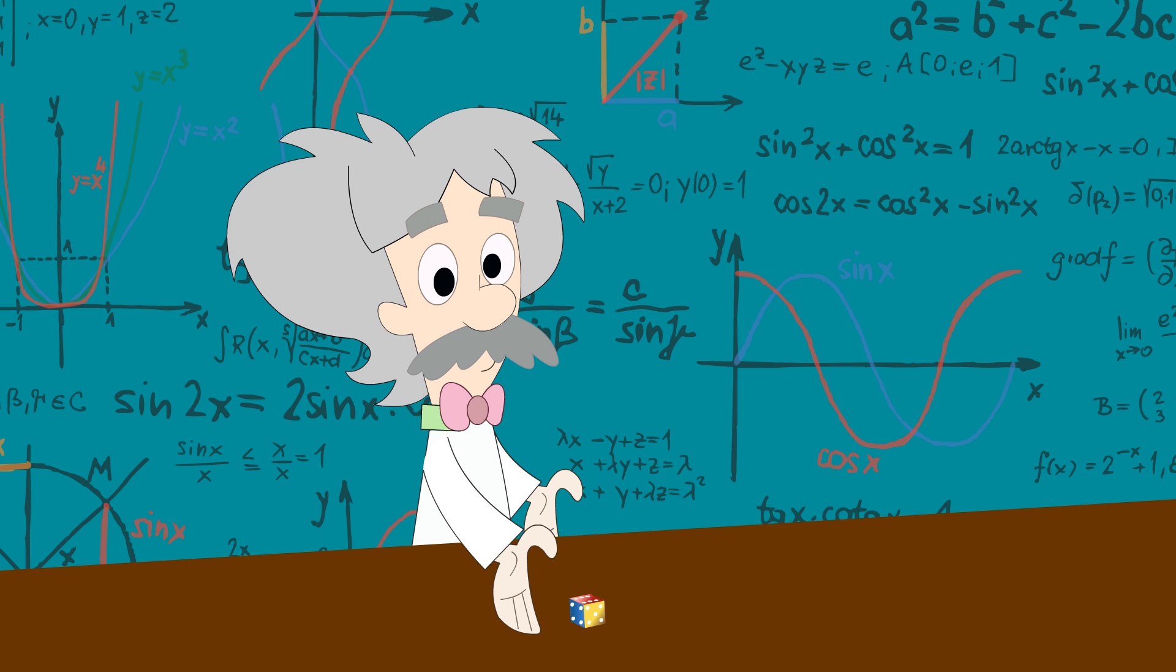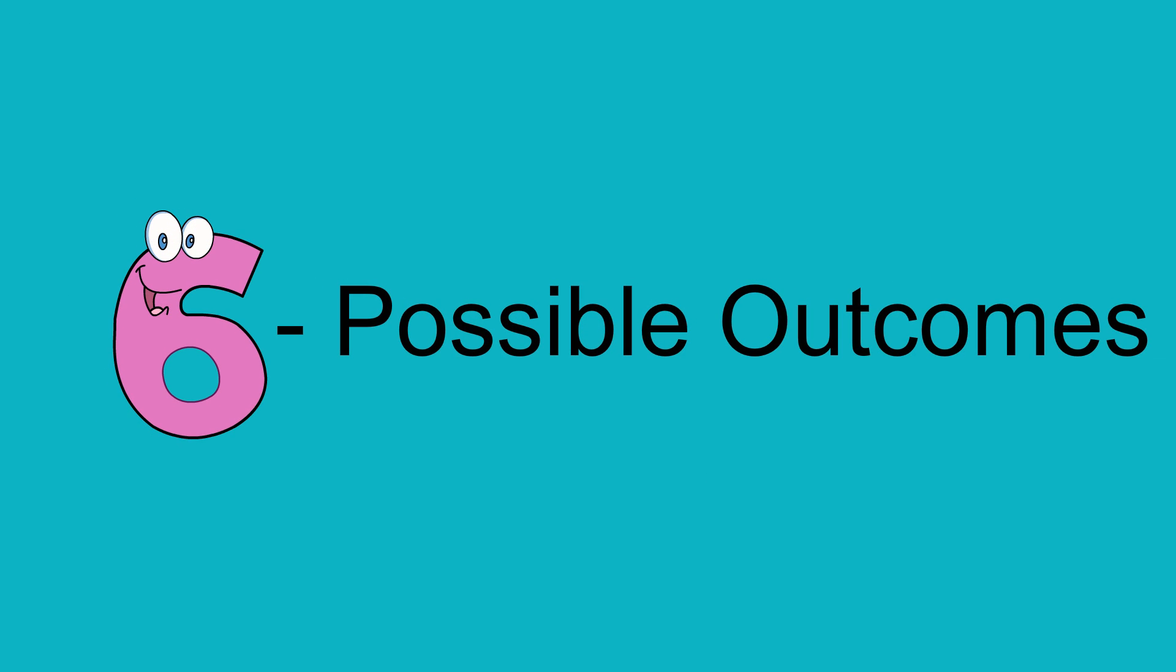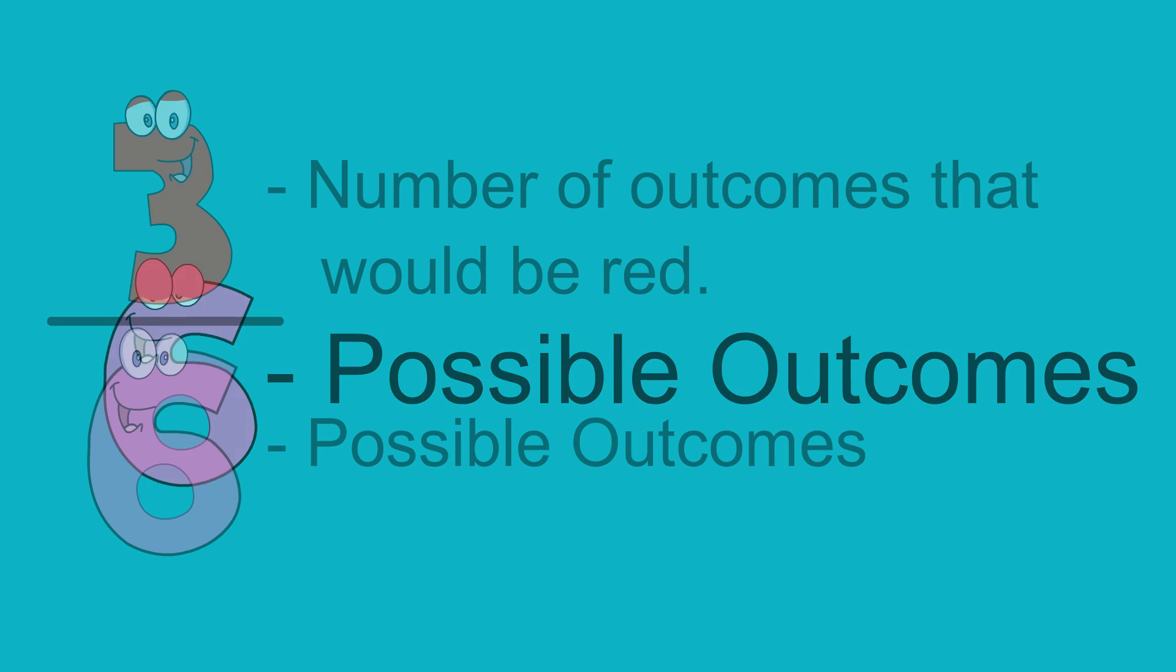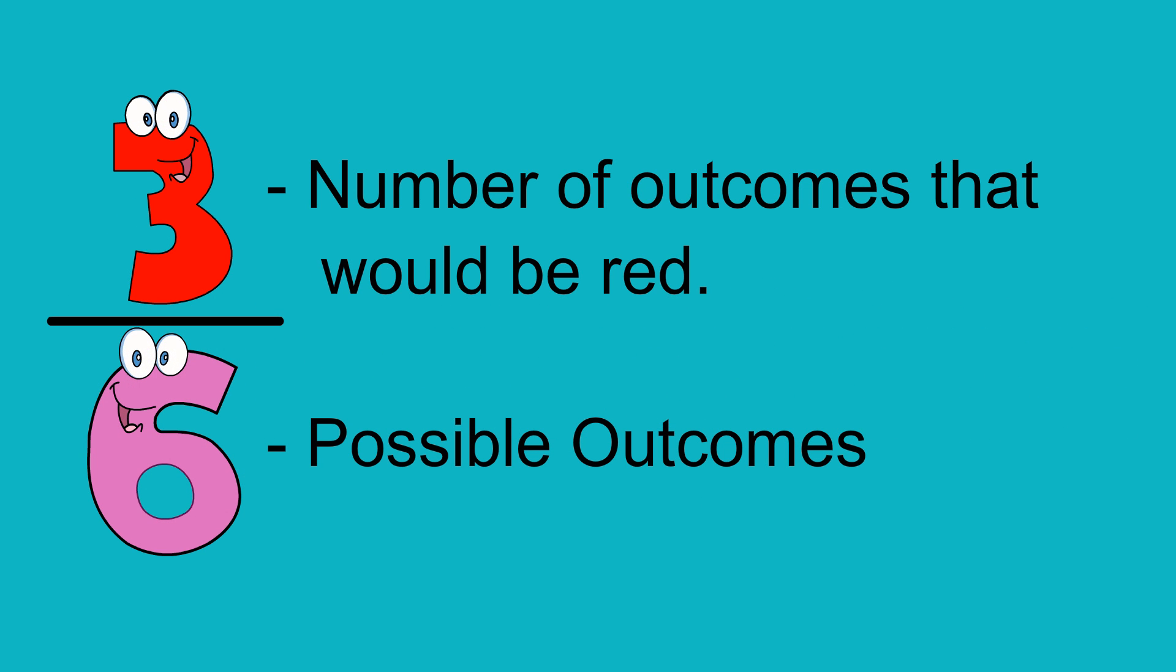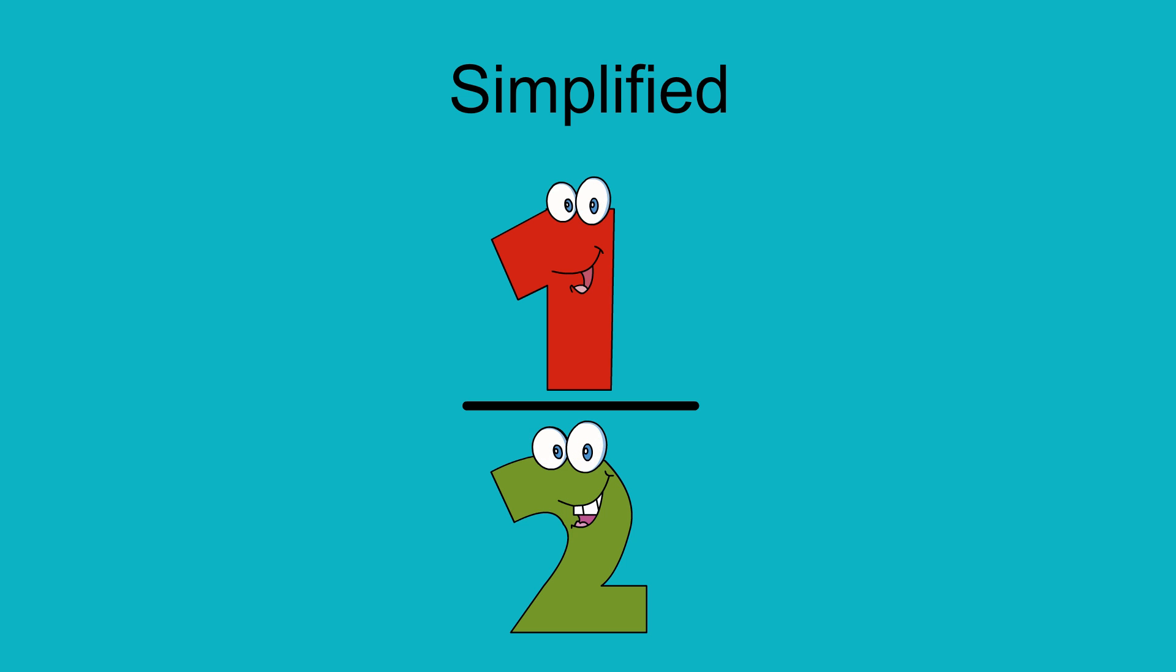First, let's think about the colour red. There are six sides on the dice, so there are six possible outcomes. Three of the six sides are painted red, so our fraction is three out of six, which can be simplified to one out of two, which is an even chance.